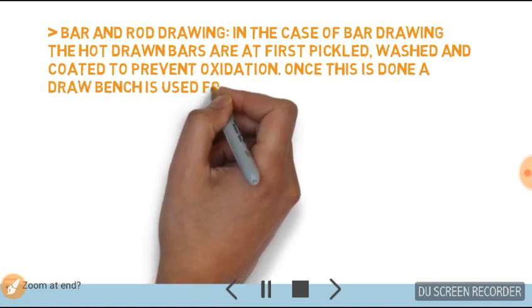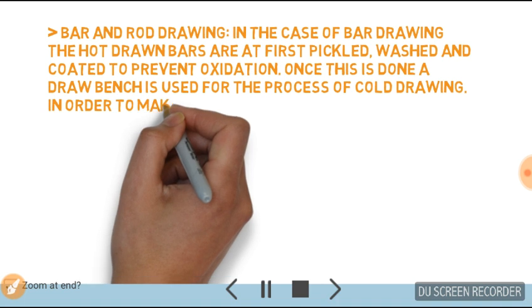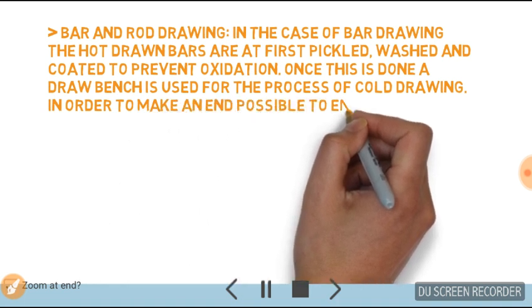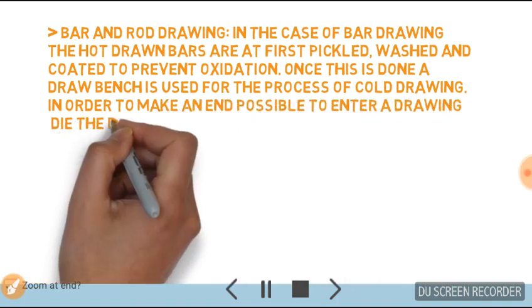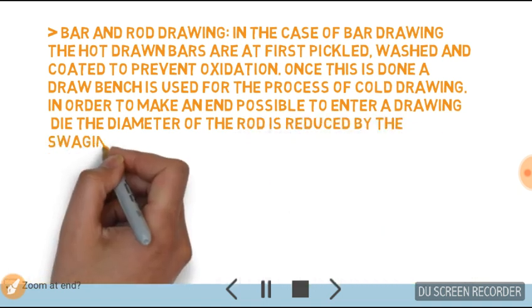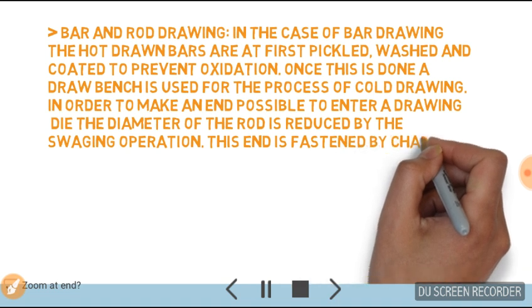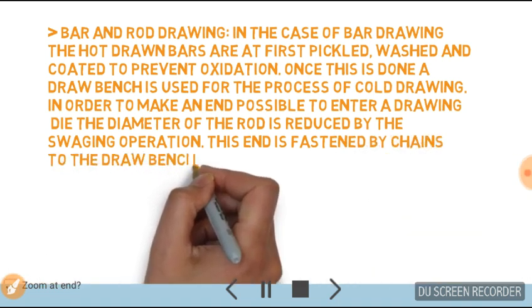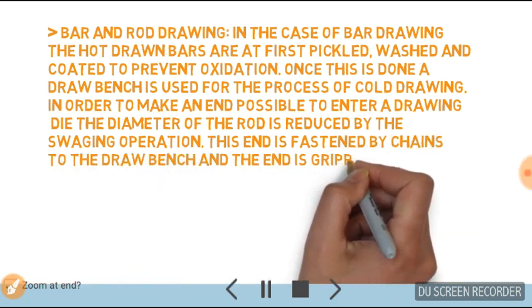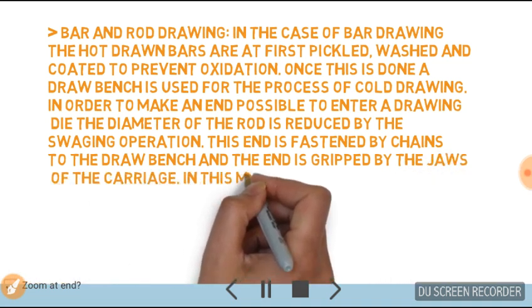Once this is done, a draw bench is used for the process of cold drawing. In order to make an end possible to enter a drawing die, the diameter of the rod is reduced by the swagging operation. This end is fastened by chains to the draw bench and the end is gripped by the jaws of the carriage.